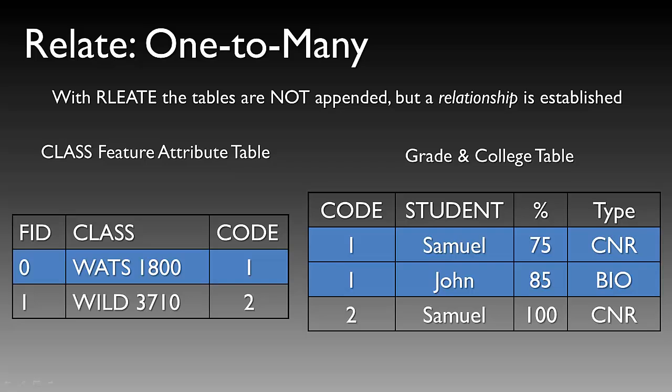On the right, we have a table that also has code as our unique identifier between the two tables, along with columns for students, percentages, and a type column identifying the college those students attend. Using a relate, rather than creating one single resulting table, a link is established between the two code fields. If we selected the Watts 1800 record with code one in our spatial data layer, it would select all rows in the grade and college table that had a code of one.